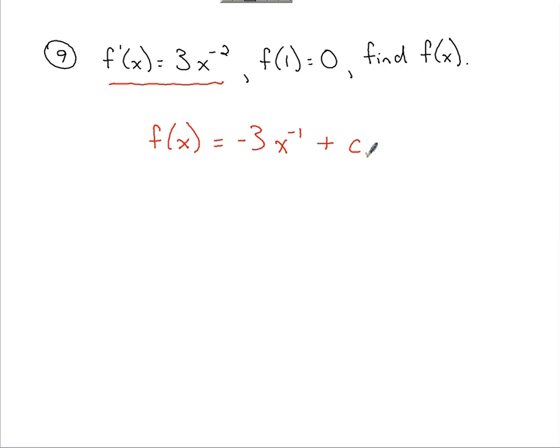If I were to clean this up just a little bit, because of the negative exponent right there, I might bump that x down, make that an x to the first. We find that f of x, so far, equals negative 3 over x plus c.